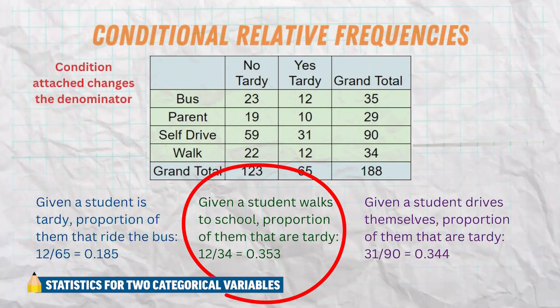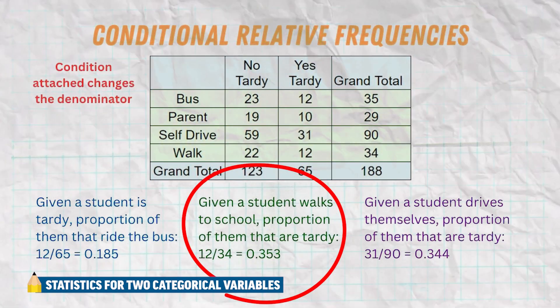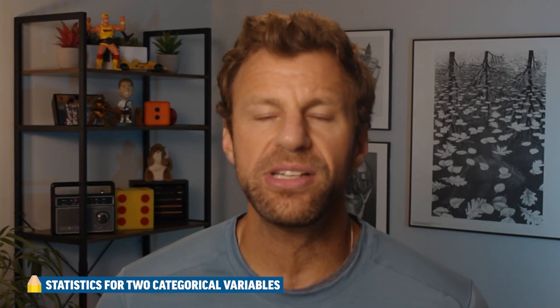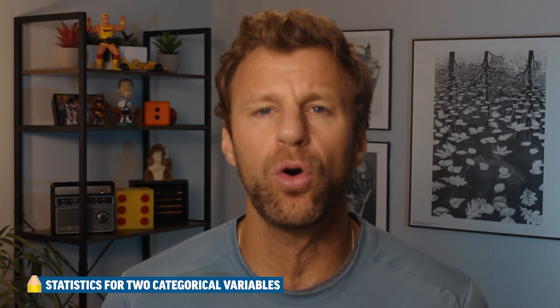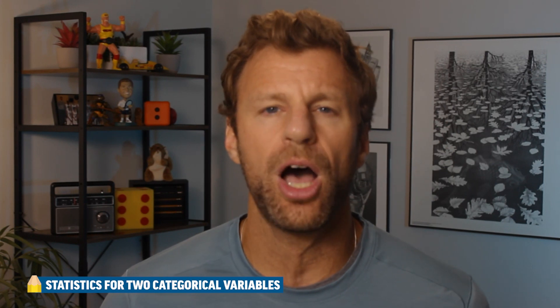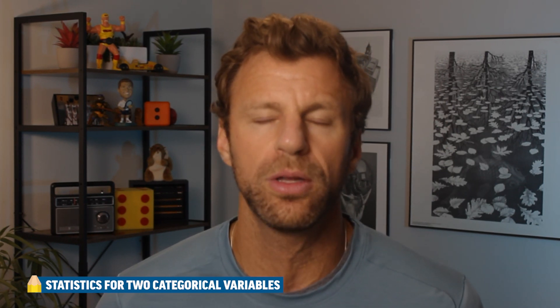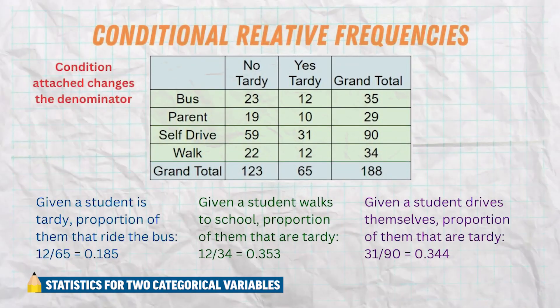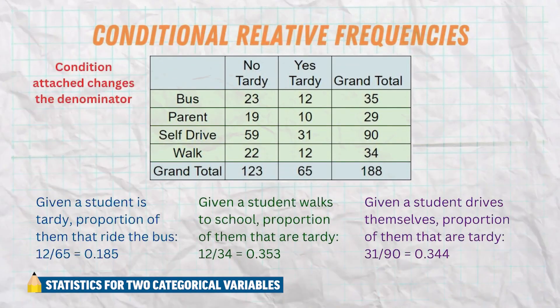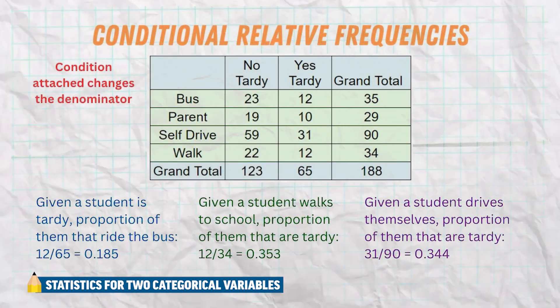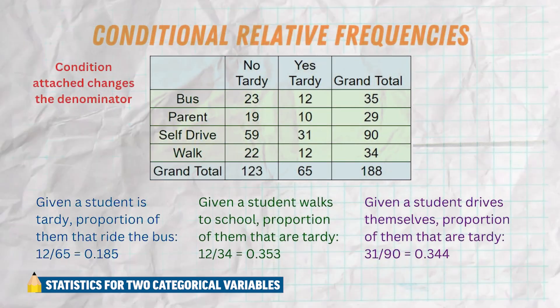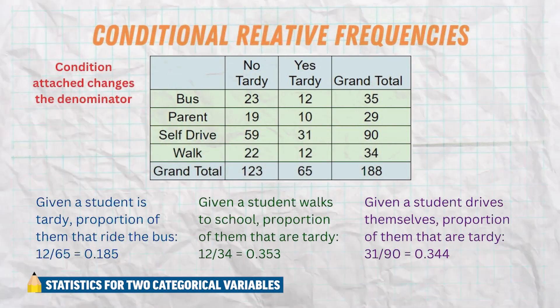Another example: given that they walk to school, what proportion of them are tardy? This time the condition is that they walk to school, which limits our denominator to only kids that walk to school. The numerator is both walking to school and being tardy. So take that value divided by the total of kids that walk to school, and you have your conditional relative frequency.